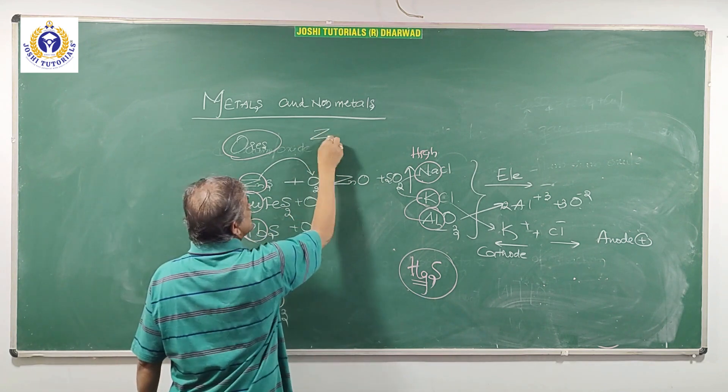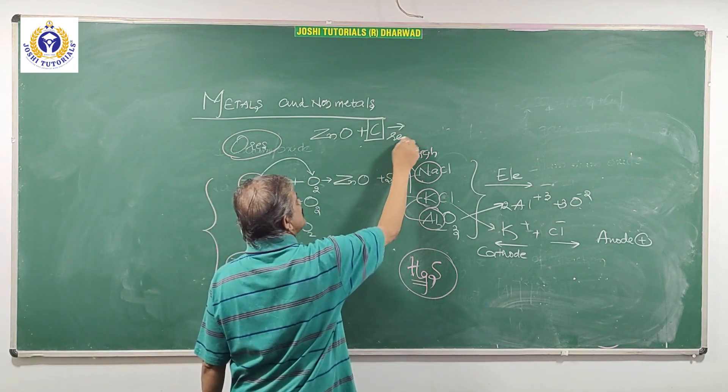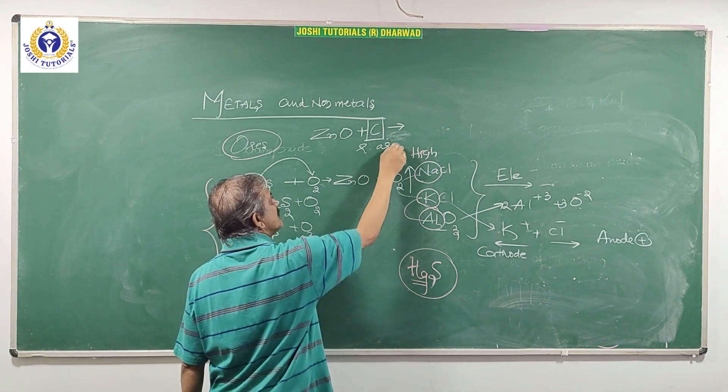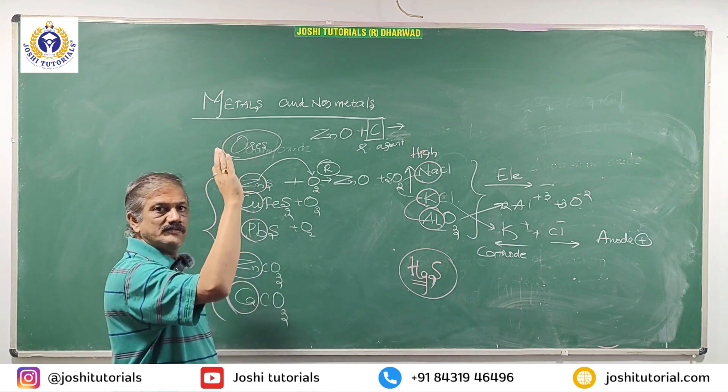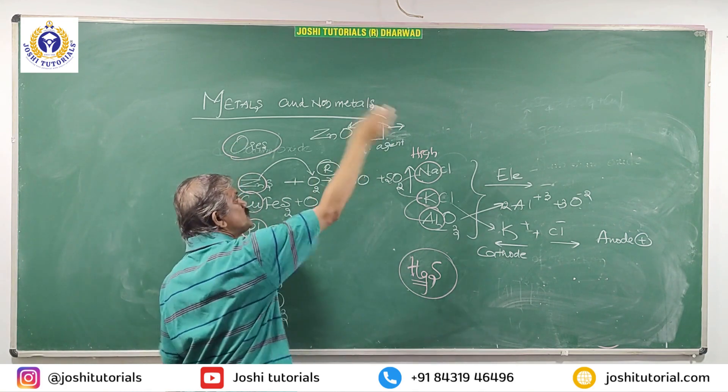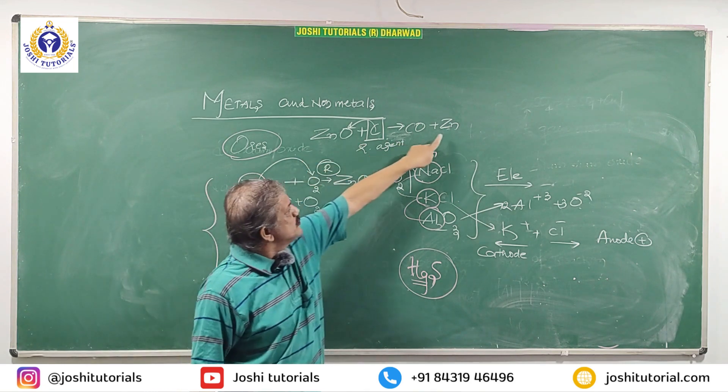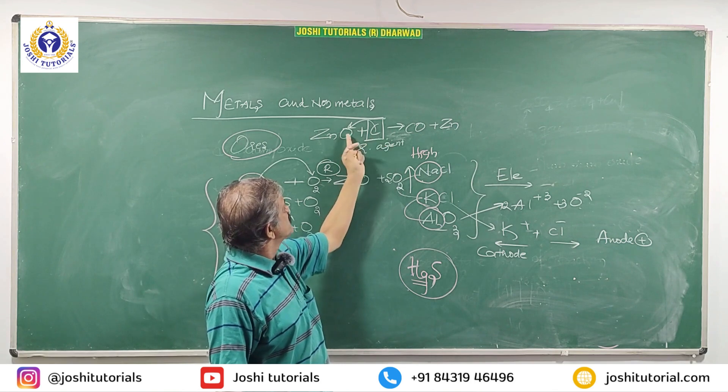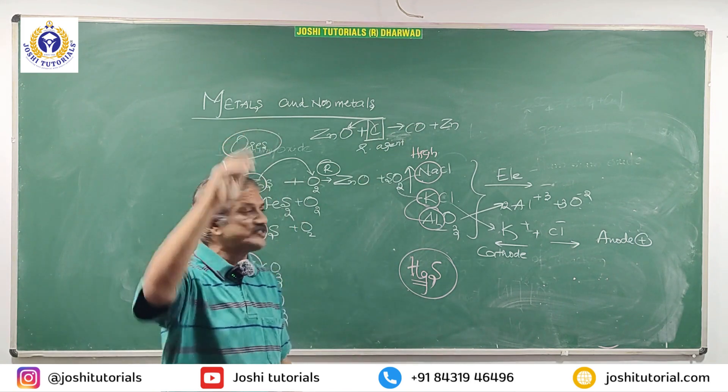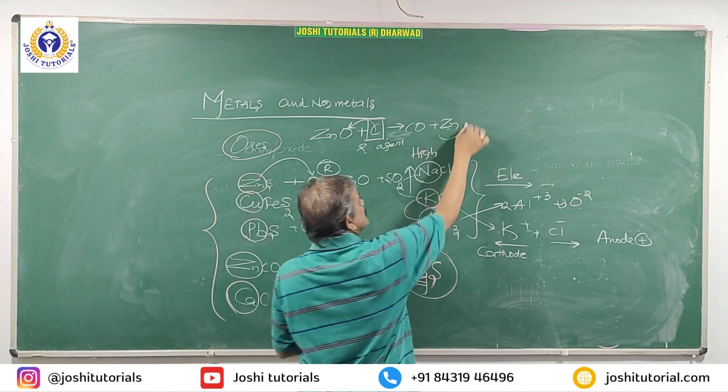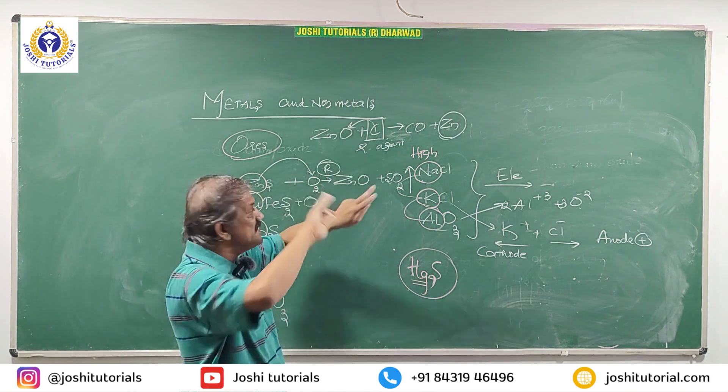This zinc oxide is heated with coke, called reducing agent. It is called roasting in presence of oxygen. This coke combines readily or removes oxygen to form carbon monoxide and zinc is obtained. Zinc oxide is reduced to zinc, called reduction. C is added by oxygen, called oxidation. Reduction oxidation. In the first chapter of chemistry, redox reaction. That's why it is called reducing agent. It removes the oxygen from metal oxide very easily.